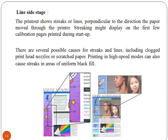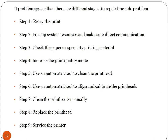The printer shows streaks or lines that are perpendicular to the direction of paper movement. Streaking might appear on the first few calibration pages during startup. Possible causes include clogged print head nozzles or scratched paper, and printing in high-speed modes can also cause streaks in areas of uniform black. To repair this problem: re-send the print job and free up system resources, ensure direct communication, check the paper or specialty printing material, increase the print quality mode, and use an automated tool to clean, align, and calibrate the print head. If needed, clean print heads manually, replace the print head, and perform a full service of the printer.